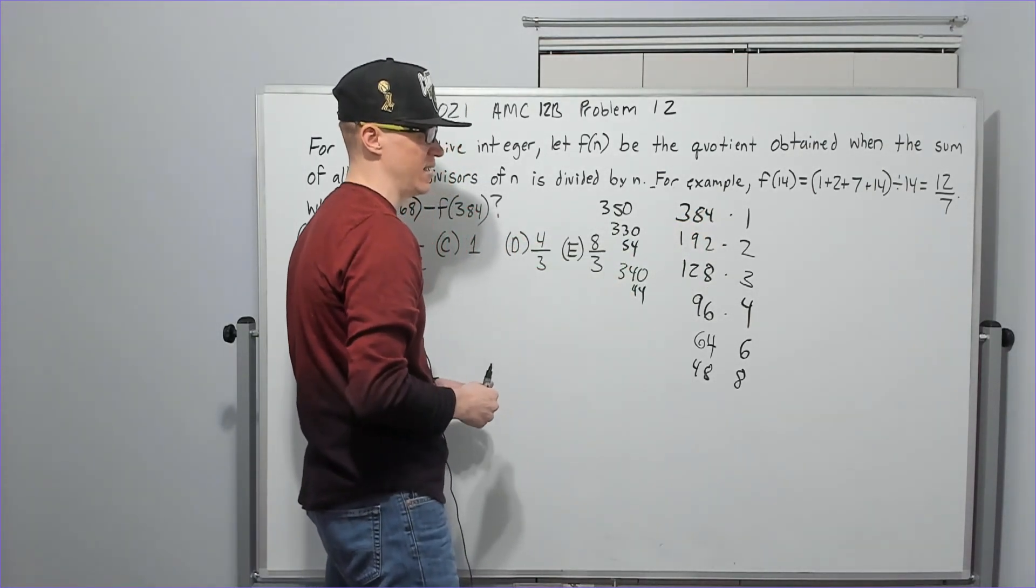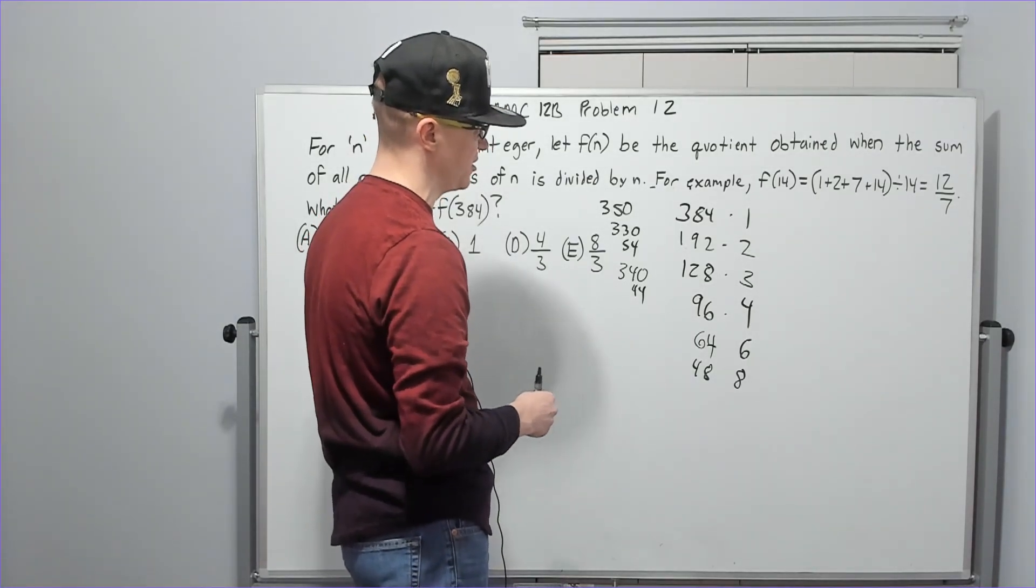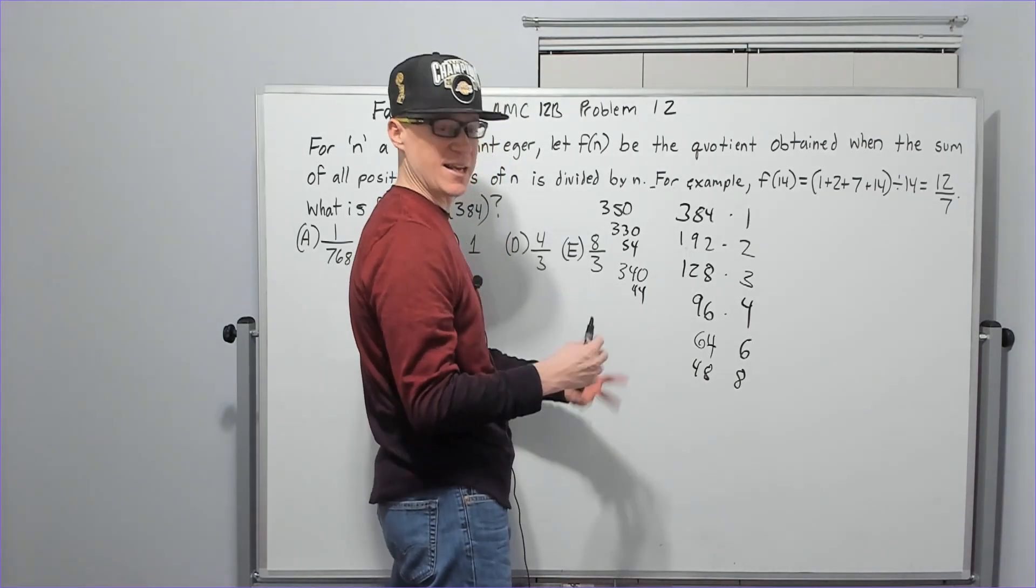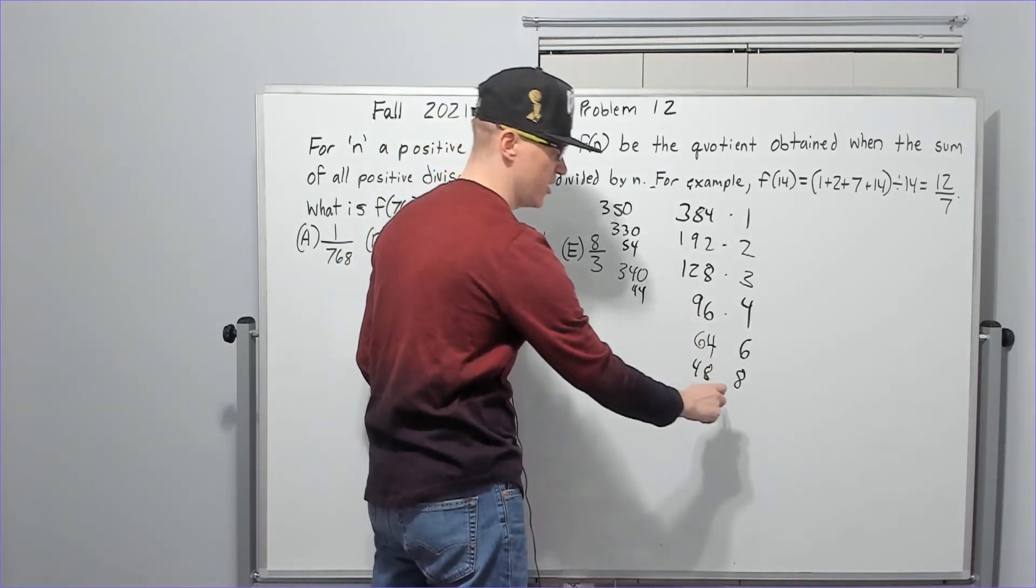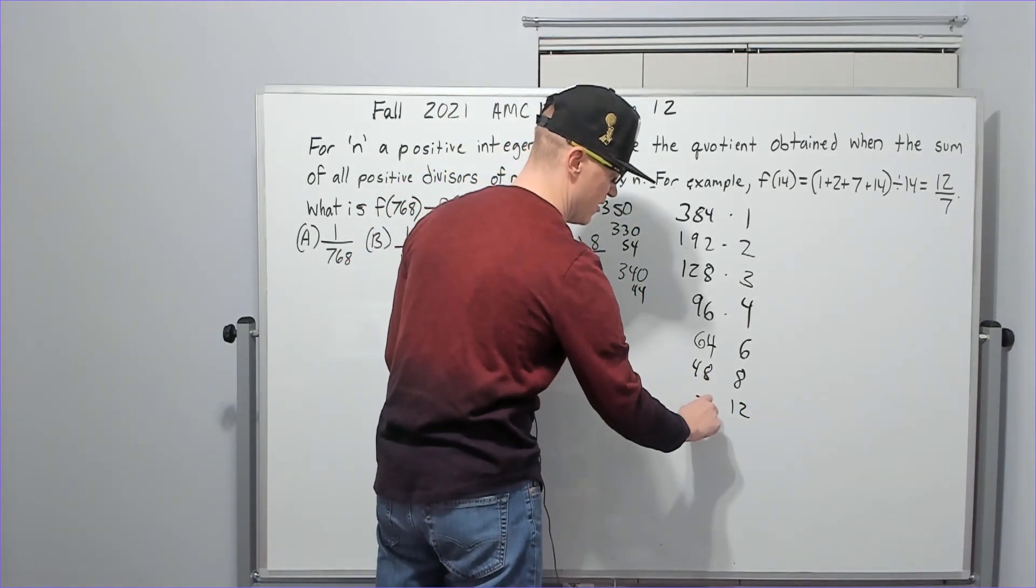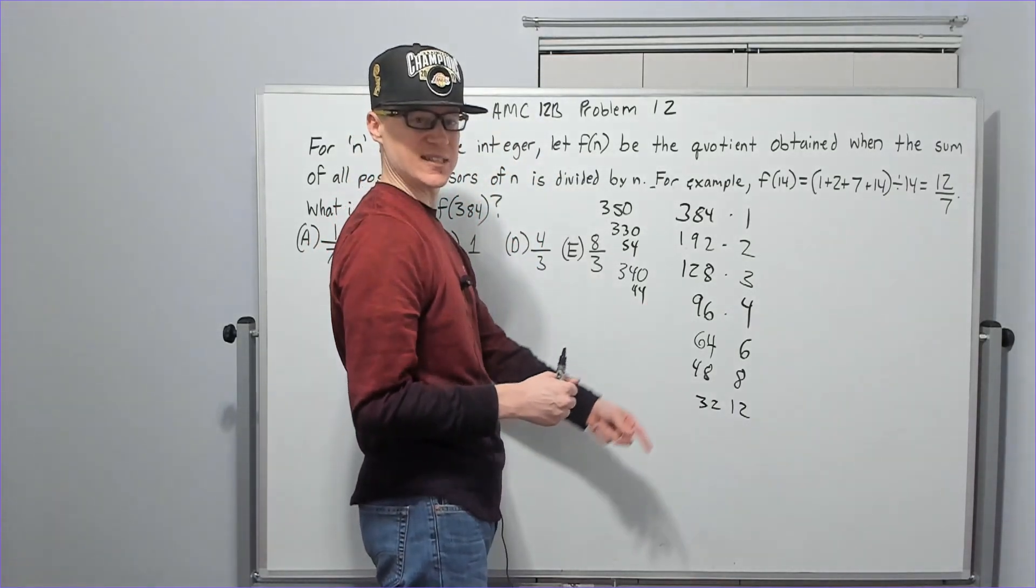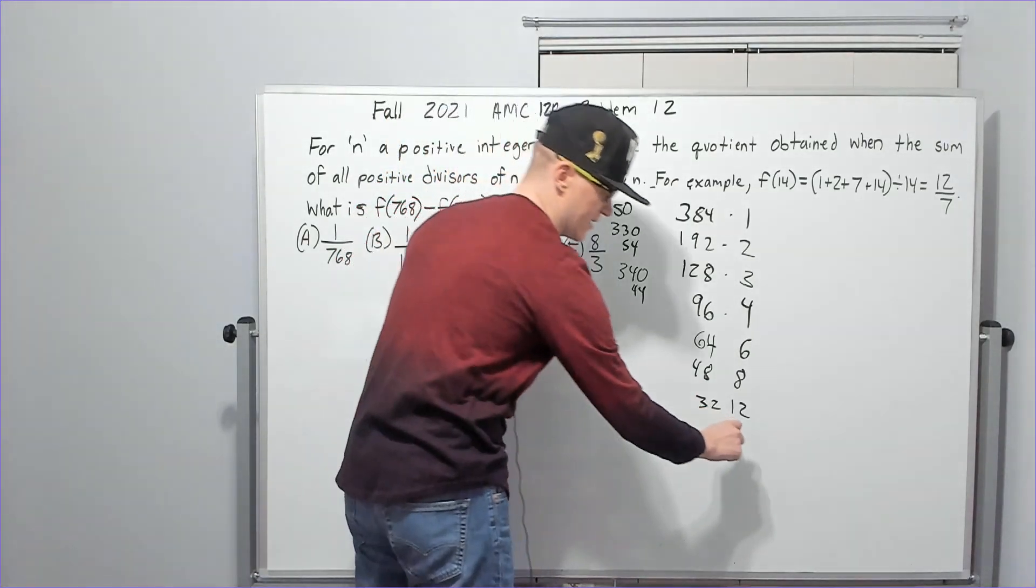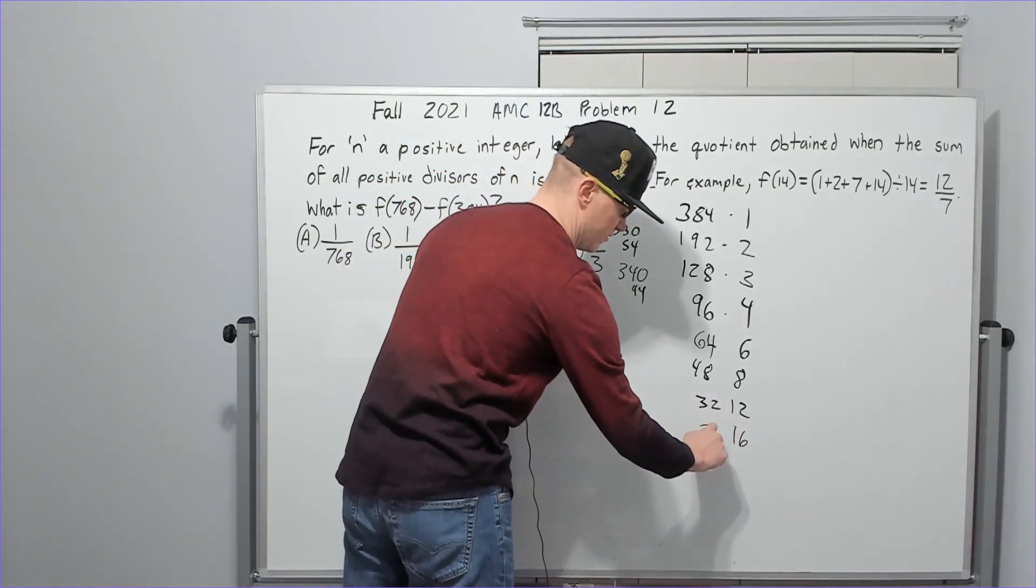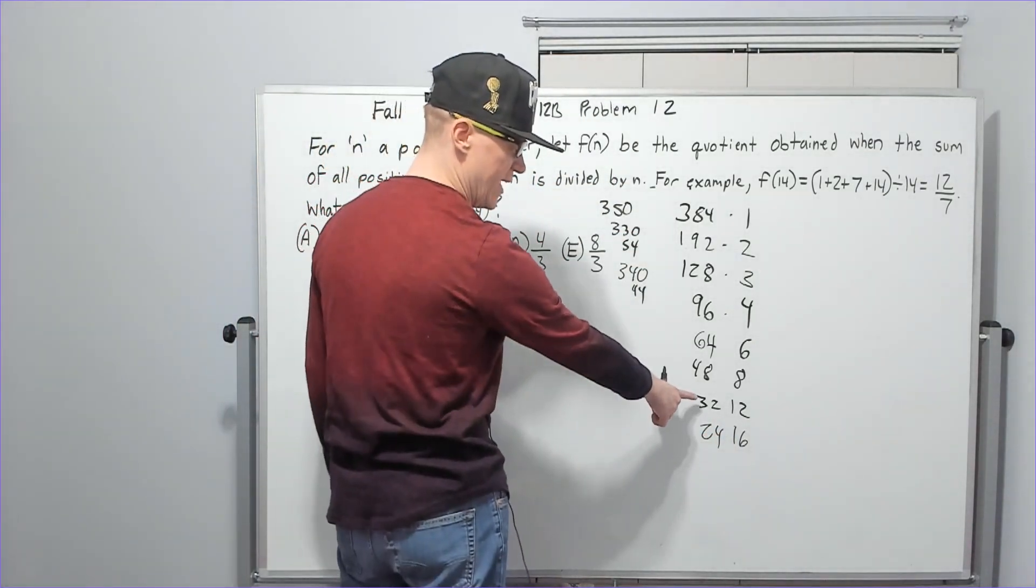What about 12? I forgot about that. 12 goes in, right? 12 is going to go into 48 four times; 4 times 8 is 32. 14 can't because you don't have a 7. 15 can't. Can 16 go in? Yes, you can see it right here. 16 goes into here twice; times 12 is 24. And that's going to be all the ones in that list.